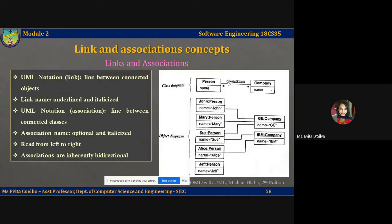An association can have a name, and association names are optional — you may or may not write them. When you do include them, they are written as italicized names. The person class is connected to the company class by the named association 'owns stock,' represented by a line connecting the two classes.